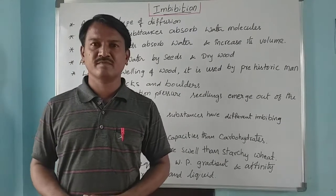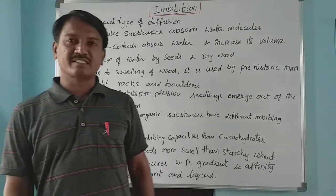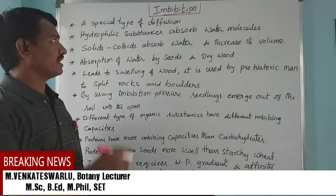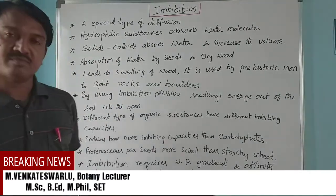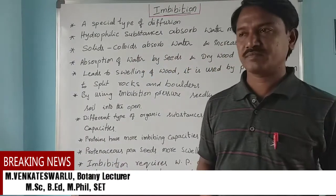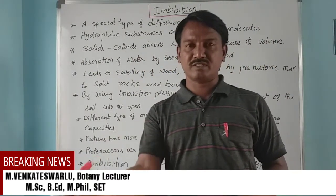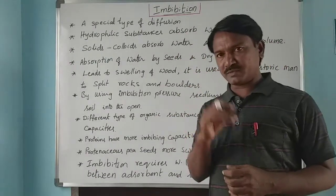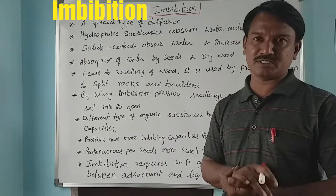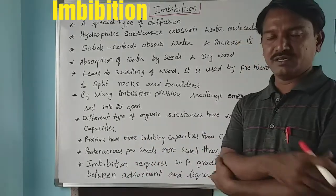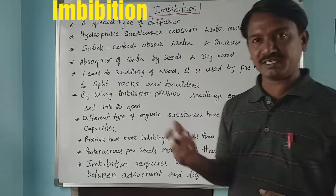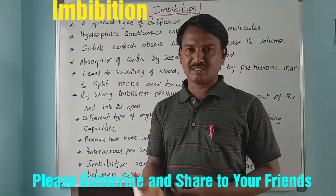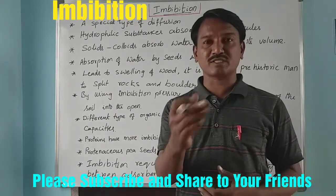Hello students, good morning. We are discussing transport in plants under plant physiology. Today our topic is imbibition — how plants absorb water molecules and move them from one region to another. There are two types: shorter distance transport and longer distance transport. In short distance transport, we have diffusion, facilitated diffusion, active transport, passive transport, and osmosis. Yesterday we completed plasmolysis.